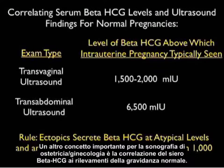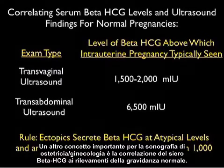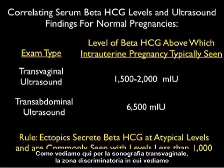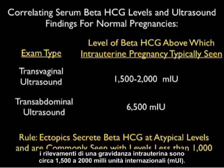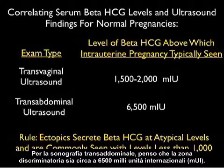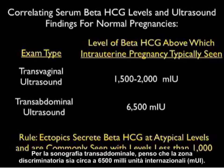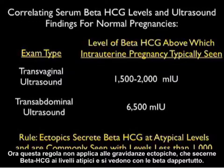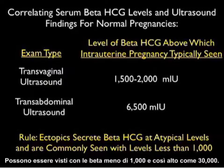Another important concept is the correlation of serum beta HCG to findings of a normal pregnancy. For transvaginal sonography, the discriminatory zone at which we will see findings of an intrauterine pregnancy is about 1,500 to 2,000 milli-international units. For transabdominal sonography, the discriminatory zone is about 6,500 milli-international units. This rule does not apply to ectopic pregnancies, which secrete beta HCG at atypical levels — betas can range from lower than 1,000 to as high as 30,000.